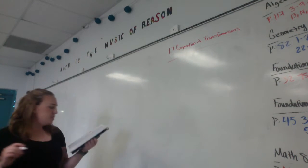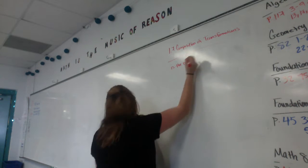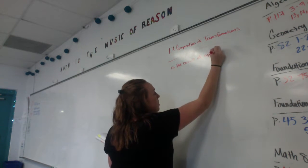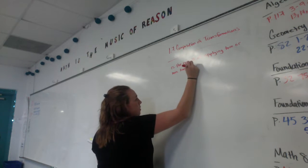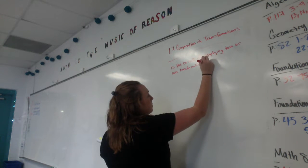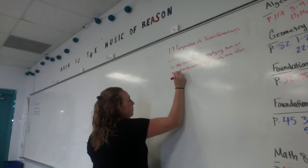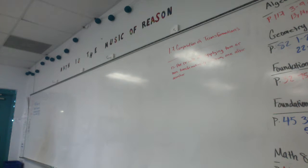Composition of transformations. A composition of transformations is the result of applying two or more transformations to a figure one after another. Just like a compound word in English class, compound means two or more. So here we have two or more transformations happening to get a new image.